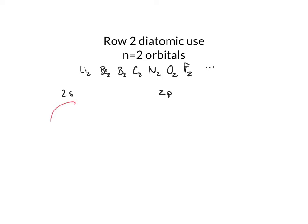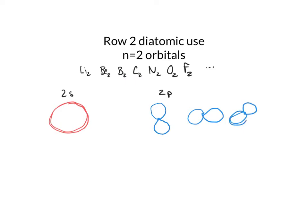The 2s orbital is spherically symmetric, just like the n equals 1 orbital, except that it has a radial node somewhere as we walk out from the nucleus — a point where the probability goes to zero. So it's larger in size than 1s and has a radial node. The 2p orbitals — pz, py, and px — all have a dumbbell shape, but they point in different directions.